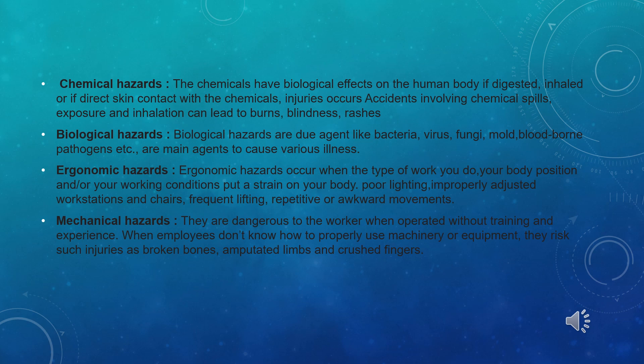Ergonomic hazards depend on the type of work you do. The first consideration is body position. Body muscles are affected by ergonomic hazards like poor lighting, improperly adjusted workstations, and frequent or repetitive movements. Mechanical hazards arise when workers operate machines without training and experience. Risks or injuries include broken bones and crushed fingers.